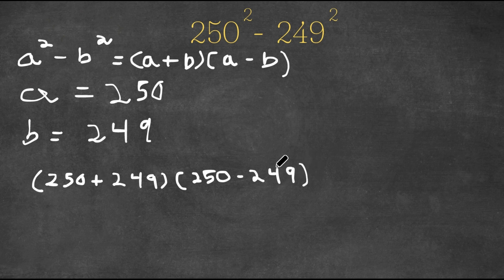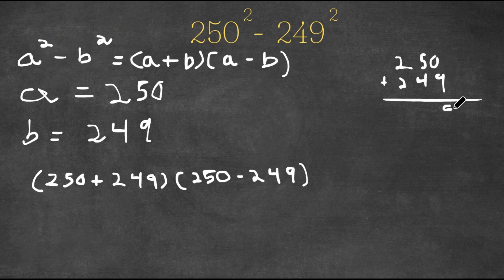Now 250 plus 249, I'll write that right here. 250 plus 249: 0 plus 9 is 9, 5 plus 4 is 9, and 2 plus 2 is 4. And 250 minus 249, well that's simply 1.